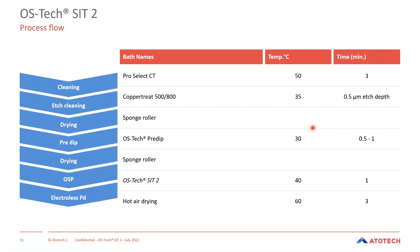Let me go into more detail on the process flow. It starts with an acidic cleaner, followed by a dedicated microetch system for the OSP coating, which provides very good copper leveling properties and a very smooth copper surface. The panel is then dried and moves into the pre-dip — which is already an active pre-dip providing a thin organic coating on the copper — then dried again and moving into the active OSP bath where the organic coating is deposited. The overall processing time is very short.